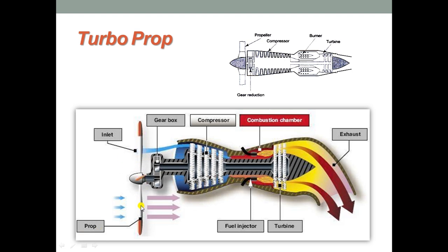The turbo prop overall efficiency is improved by providing a diffuser before the compressor. The pressure rise takes place in the diffuser due to conversion of kinetic energy of the incoming air. This type of compression is known as the ram effect, similar to the turbo jet, where the diffuser converts the kinetic energy of the air into pressure.